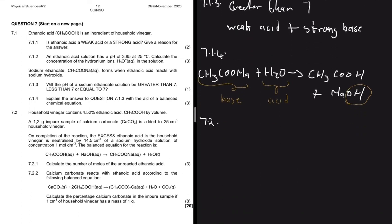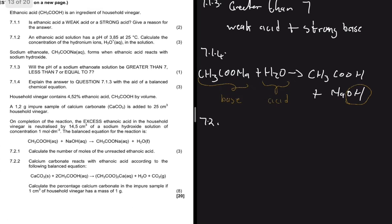Moving to 7.2: household vinegar contains 4.52% ethanoic acid (CH₃COOH) by volume. 1.2 g of an impure sample of calcium carbonate is added to 25 cm³ of household vinegar. On completion of the reaction, the excess ethanoic acid is neutralized by 14.5 cm³ of sodium hydroxide solution of concentration 1 mol·dm⁻³. 7.2.1 asks us to calculate the number of moles of unreacted ethanoic acid.